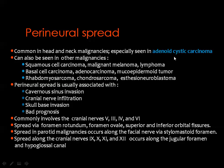The most commonly affected nerve root is the fifth — the trigeminal nerve — but perineural spread can occur along any of the well-known cranial nerves. This will lead to invasion of the cavernous sinus, invasion of the cranial nerve itself, and invasion of the skull base.